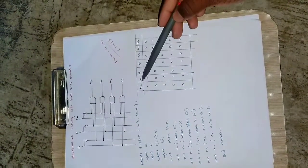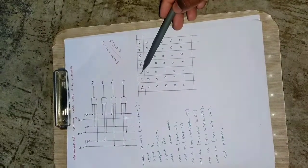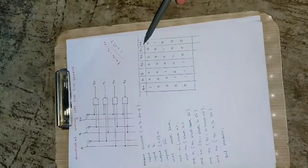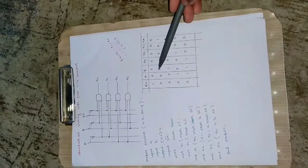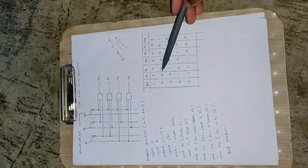This is the truth table where enable is there, A and B are the inputs, and Y3, Y2, Y1, Y0 are the outputs. A decoder converts the data, and here it is converting from 2 bits to 4 bit data.